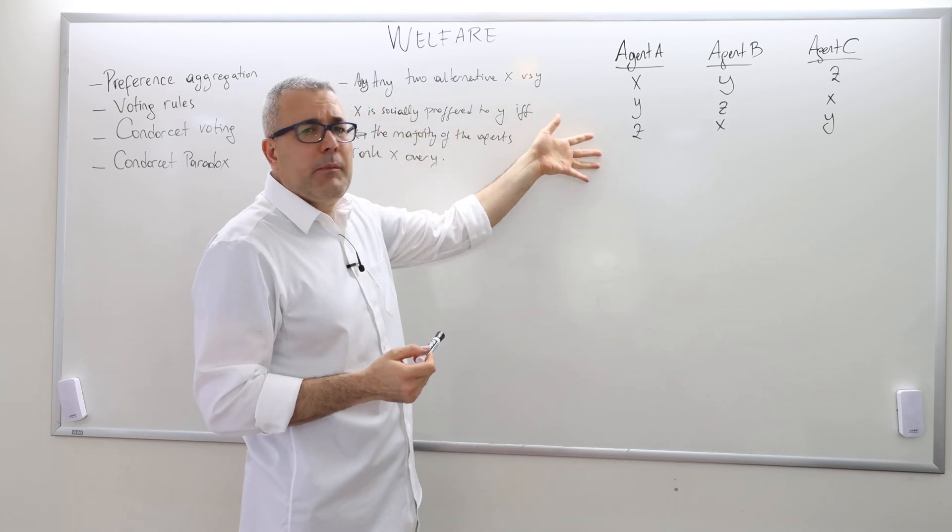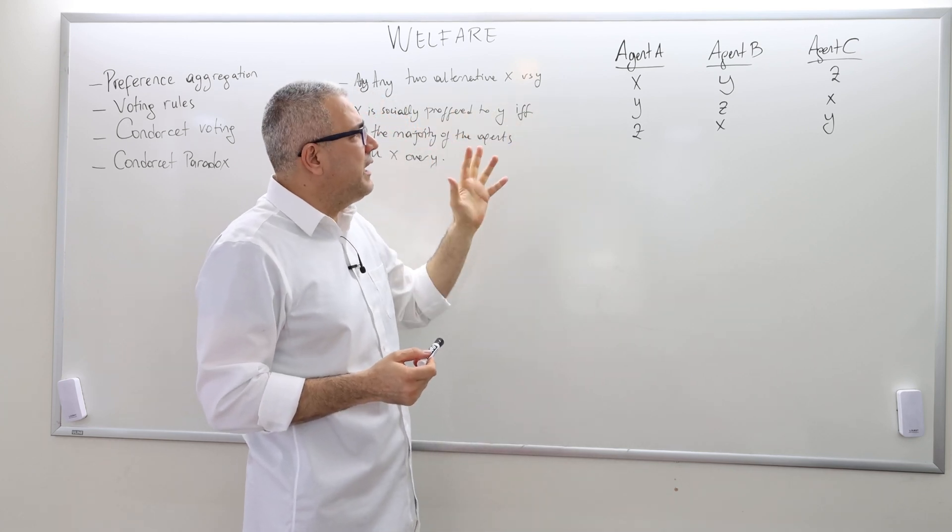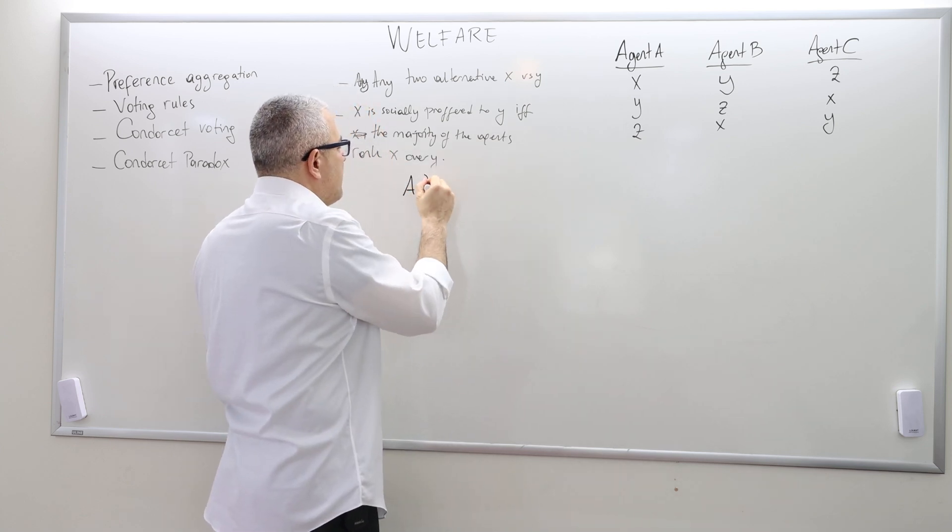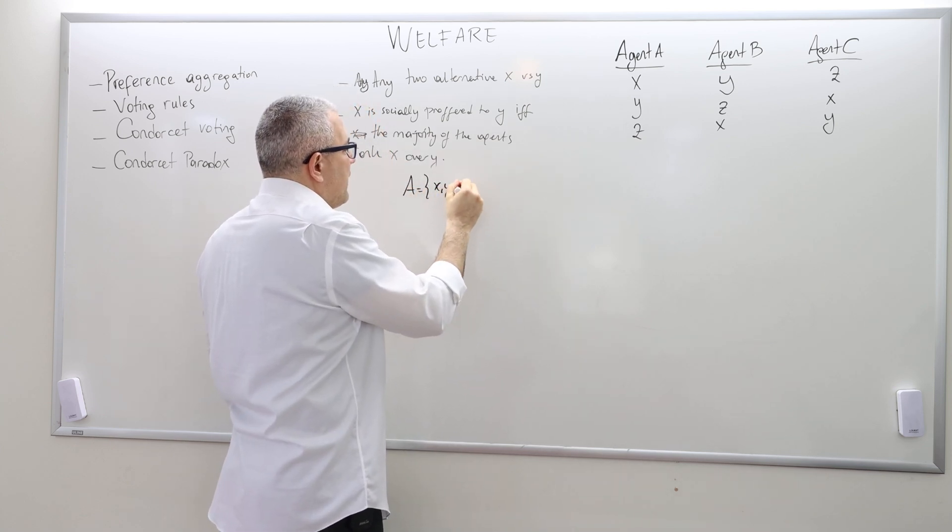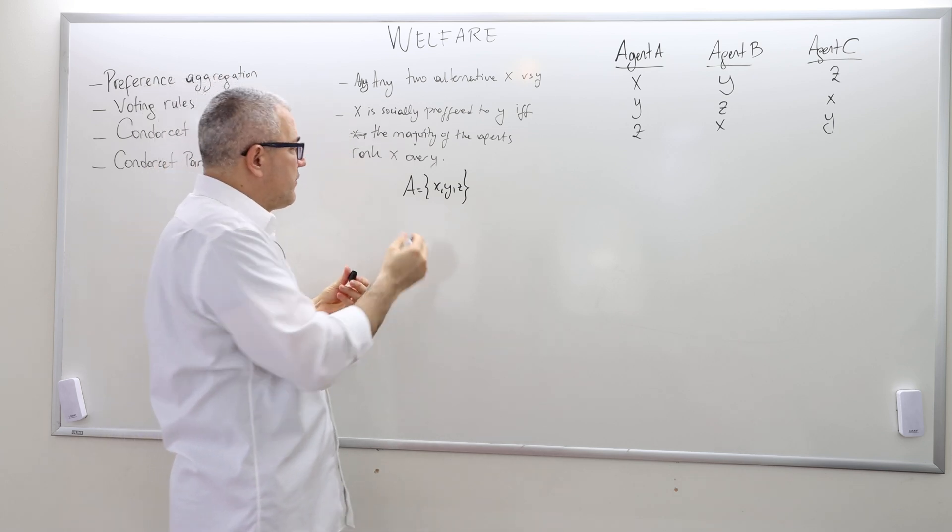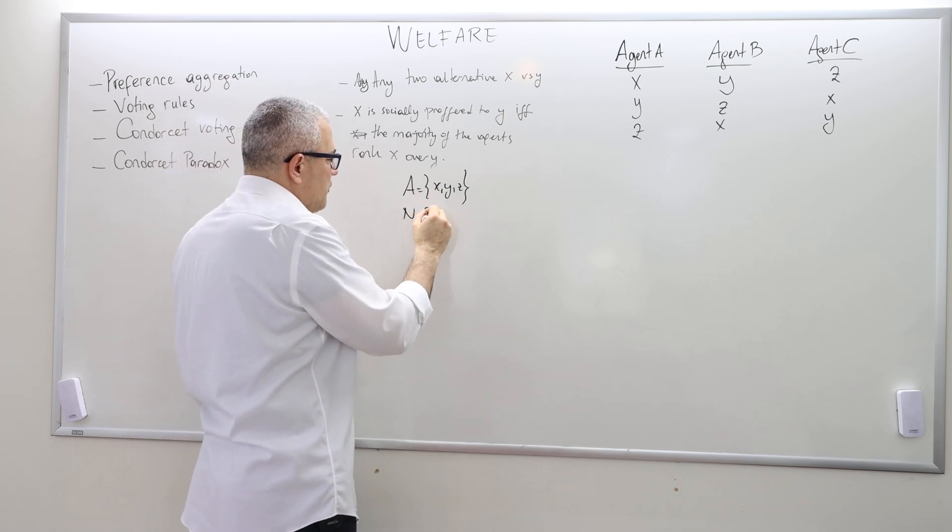So now let's think about this example. I still have three alternatives. A is equal to X, Y and Z. These three, and I have three agents, n is equal to three.